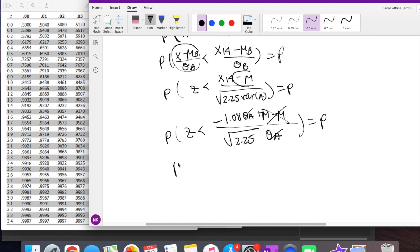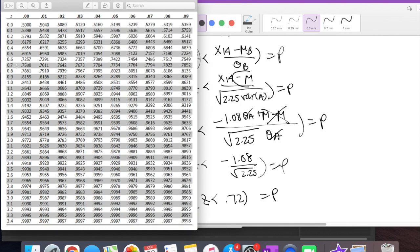So this is exactly the probability that Z is less than some negative 1.08, divided by square root of 2.25, which is equal to P. So this is saying some Z value is equal to 0.72. Some Z value less than 0.72 is equal to P. So let's look at our chart. 0.72, Z value is equal to 0.72, 0.72.